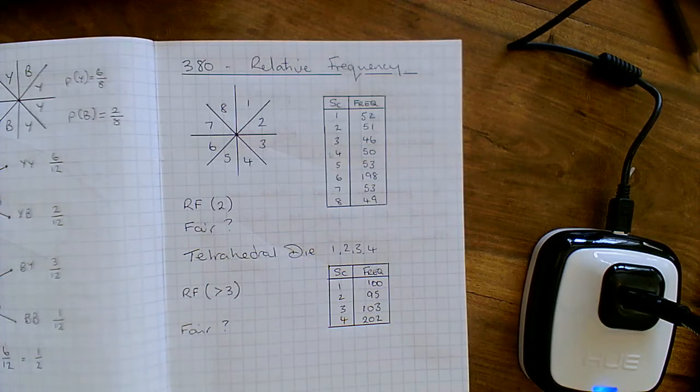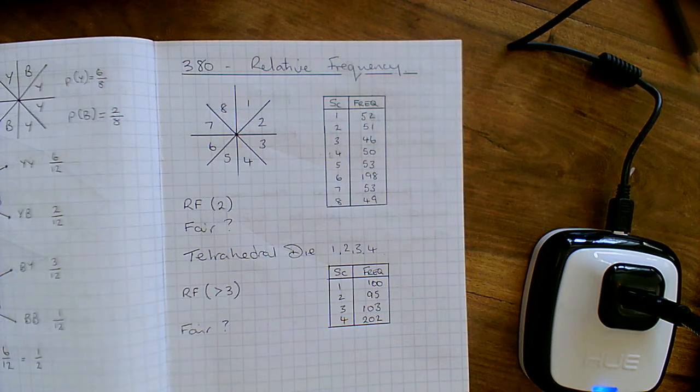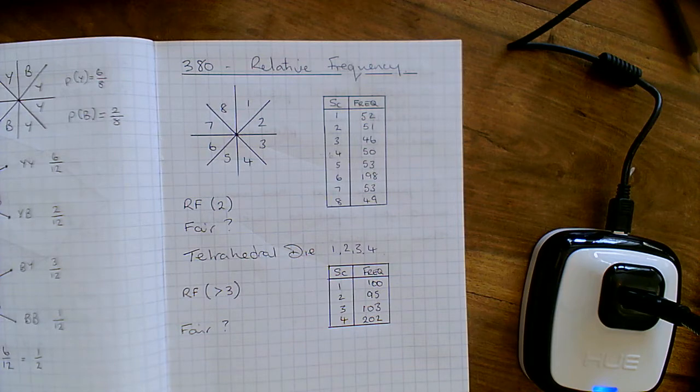Hello and welcome everybody to another walkthrough of a MyMath task. This is 380 relative frequency. Now relative frequency is very similar to probability. It's the probability of something happening after a number of experiments have taken place.